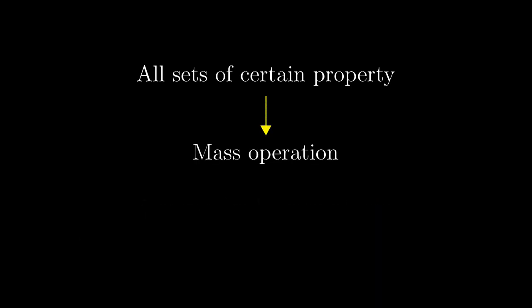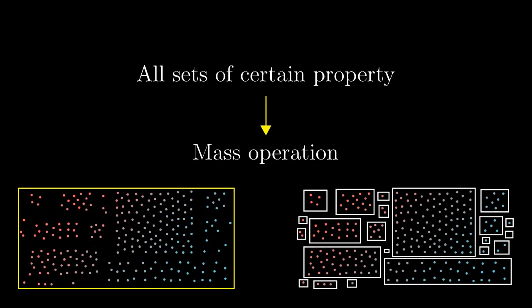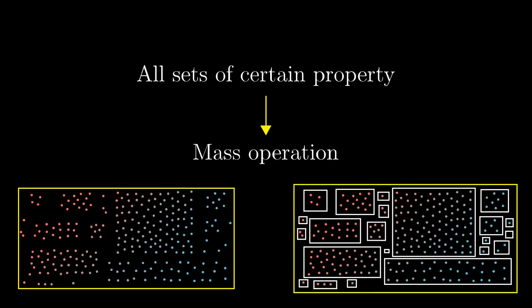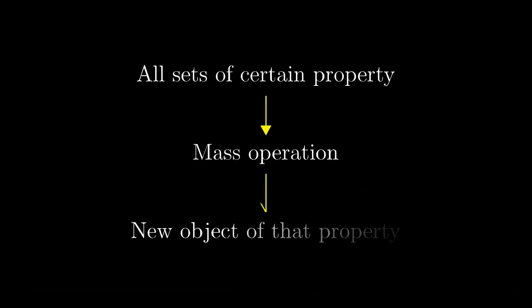Then we apply a mass operation to them, we take their union or we pack them into a set. This produces a new such set. For example, a new set not containing itself.